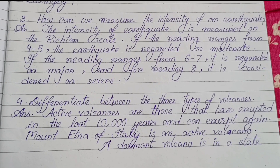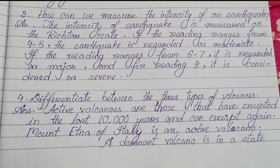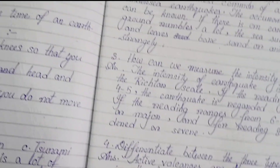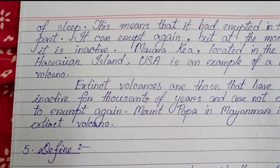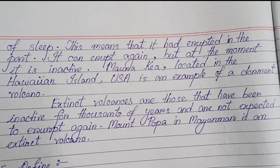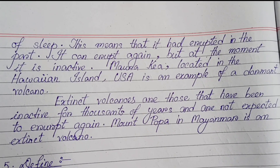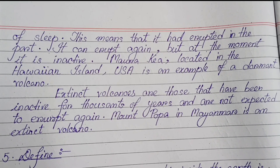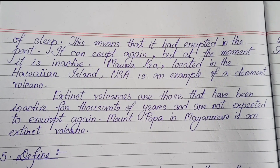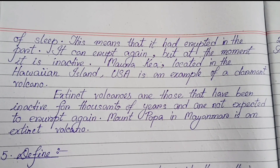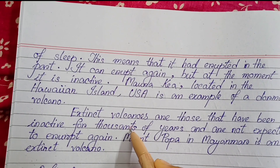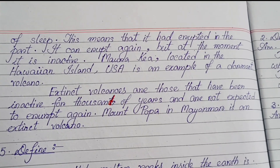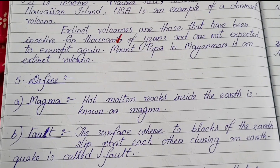Number four: Differentiate between the three types of volcanoes. Active volcanoes are those that have erupted in the last 10,000 years and can erupt again; Mount Etna of Italy is an example. A dormant volcano is in a state of sleep — it had erupted in the past and can erupt again, but is currently inactive; Mauna Kea in Hawaii, USA is an example. Extinct volcanoes are those that have been inactive for thousands of years and are not expected to erupt again; Mount Papa in Myanmar is an example.